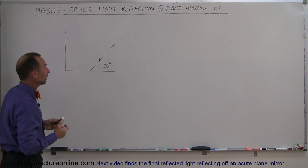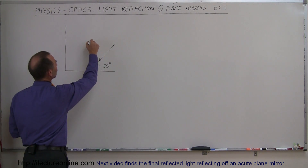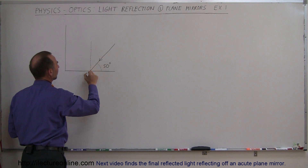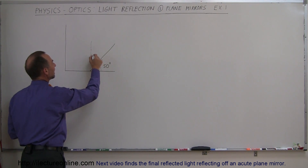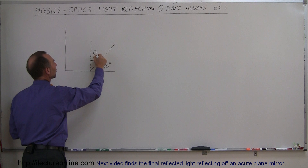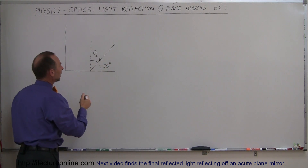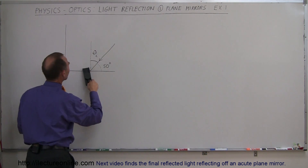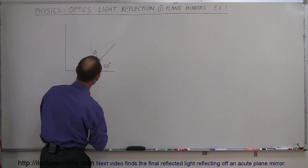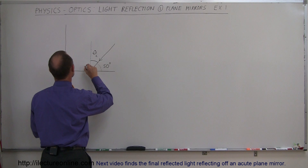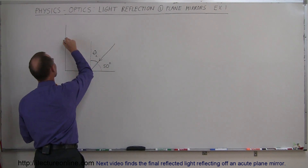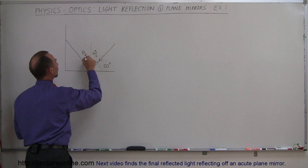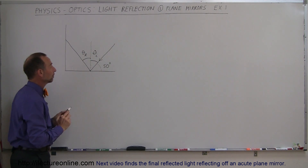Here we have a ray coming in at 50 degrees. Let's always draw the normal to the mirror where the light is incident, and then we identify the incident angle — that's theta sub i, the incident angle. Of course, we know that the reflected angle will be the same, so let's make it look like this. That's much better. This is the angle of reflection, theta sub r, and we know that those two have to be equal to each other.